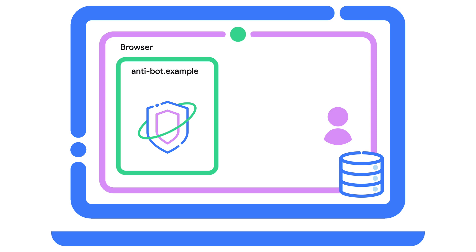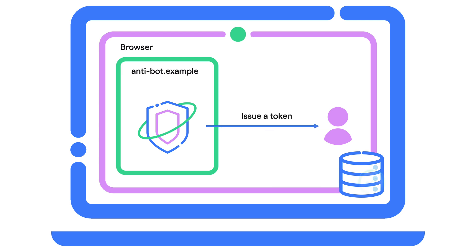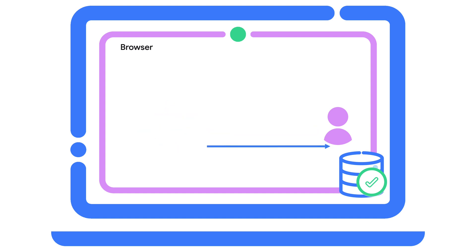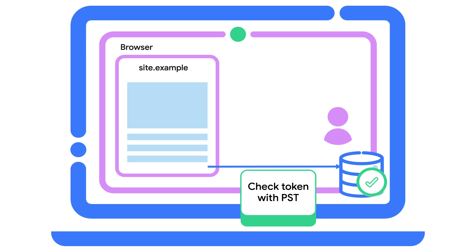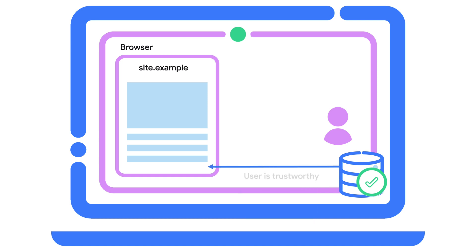Now that you know how to unlock widget interactions, what about fraud detection? We also have an API for you: Private State Tokens. Private State Tokens enable trust in a user's authenticity to be conveyed from one context to another. You can issue a cryptographically signed token with limited information that is stored in a user's browser. These tokens can then be redeemed on other sites to check if the user is trustworthy. Because of the limited information included, these tokens cannot be used to re-identify users across sites.